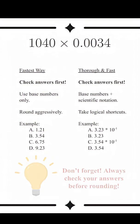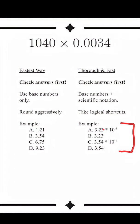The second fastest way to round is by using base numbers and logical shortcuts. With these answer choices, we need to be more precise. But notice,